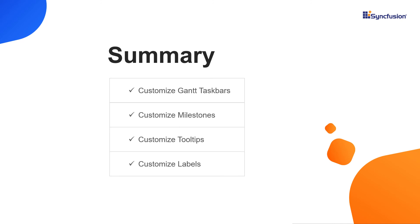Finally, let me summarize the main points. I explained how to customize the taskbar's appearance using templates. I also explained how to customize the appearance of the milestone, tooltips and labels. You can download this working example from the GitHub link in the video description below. You can also check if you are eligible for our community license, which gives you a free license key to use our Blazor products. If you found this video useful, click the like button and subscribe to our channel to get notifications about new videos.